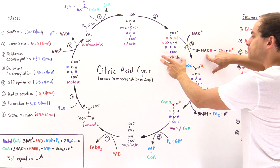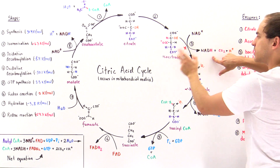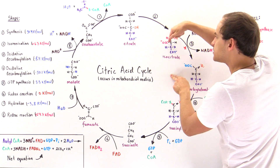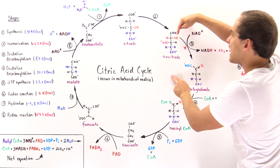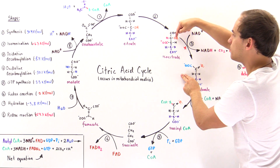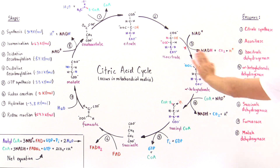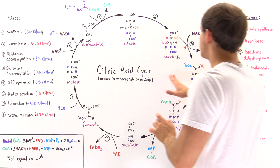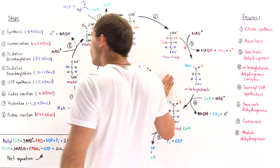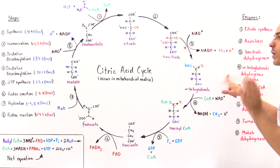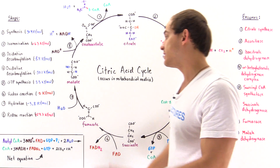In the process, we essentially oxidize the isocitrate, and we form the alpha-ketoglutarate. Also in the process, this carbon dioxide region is released along with the H ion attached to the oxygen. We form the carbonyl group, and the alpha-ketoglutarate is now ready to undergo the next step. The amount of energy released in step three is equal to negative 8.4 kilojoules per mole. The formation of the alpha-ketoglutarate is actually the rate-determining step, and we'll discuss that in more detail in a future lecture.